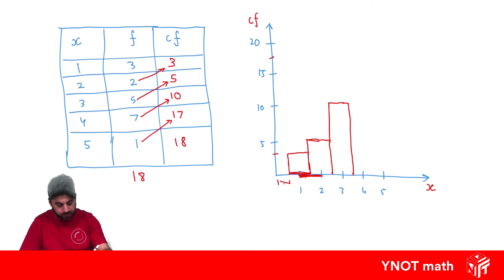Cumulative frequency for 4 is 17, which is about there. You'd have a ruler and be doing it a lot nicer than me. And cumulative frequency for 5 is 18, so a little bit higher.